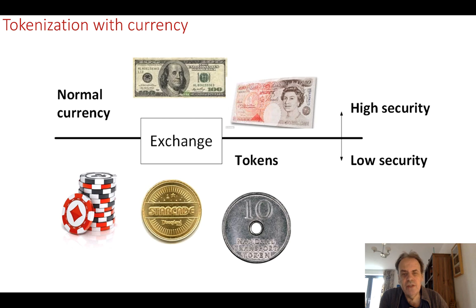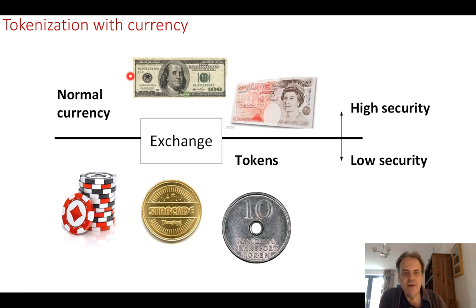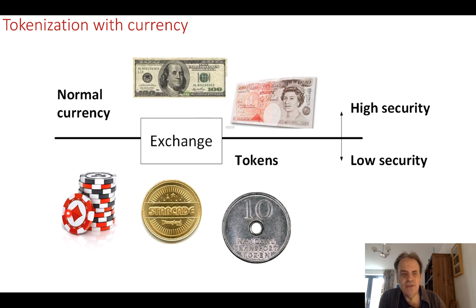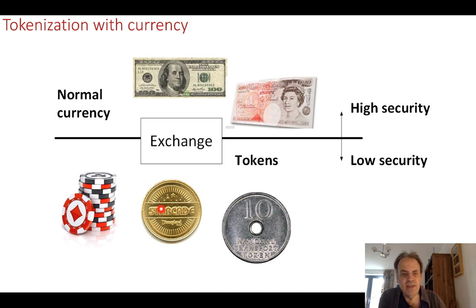Tokenization is one route to improve data security. We're well used to this because we have our currency, which is high risk — we need to make sure we look after our money. But if we want to play at the casino, go to Disneyland, or travel, we can convert our money into tokens through an exchange. This is a much lower risk where we only risk the value of the tokens and not all of our money. Also, if we lose our tokens it might be possible to regain them by cancelling those tokens.